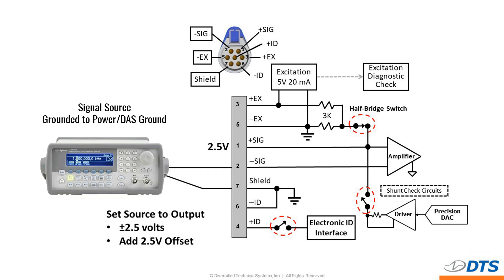If you're working with a signal generator that has a grounded output — and this also applies to any other signal source that has a ground-referenced output — you need to make your connections a little differently. In this case, we want to connect the ground of the signal generator to the ground of the DAS. We can do that either through the shield or the minus excitation connection shown here. We connect the moving signal to only the minus signal input. We again use half-bridge mode in the software, and then when we set up the signal generator for our signal output up to plus and minus 2.5 volts, we add an additional 2.5 volts offset to the signal so that all of the signals stay within the zero to five volt common mode range.